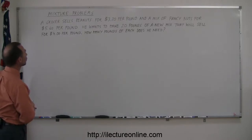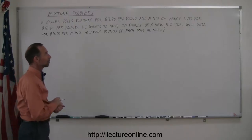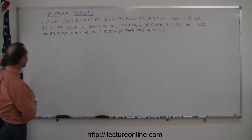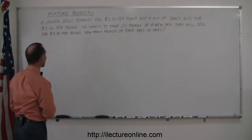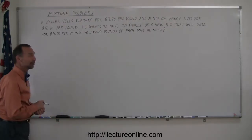It says here that a grocer sells peanuts for $3.20 a pound and a mix of fancy nuts for $5.60 per pound. He wants to make 20 pounds of a new mix that will sell for $4 per pound. How many pounds of each does he need?